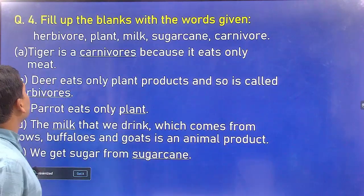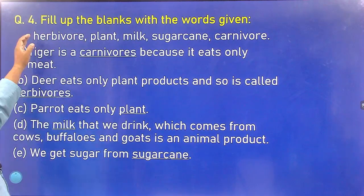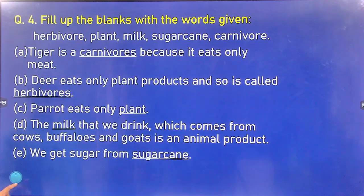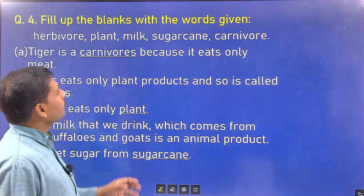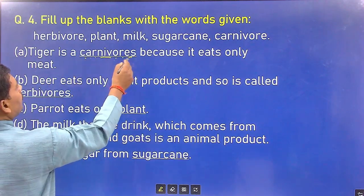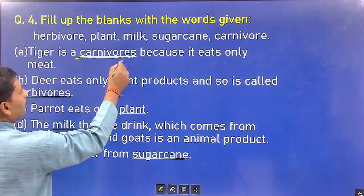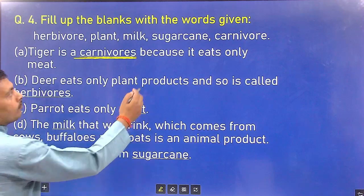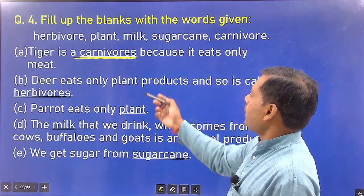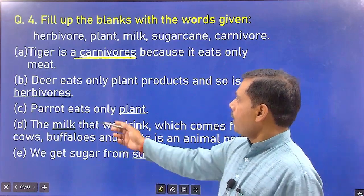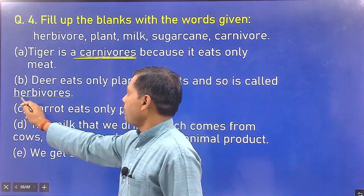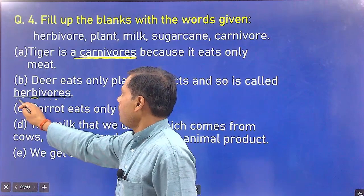The fourth question: Fill in the blanks. The words given are: herbivores, plant, milk, sugar cane, and carnivores. Blank A: The tiger is a carnivore, because it eats only meat. Blank B: Deer eat only plant products and so are called herbivores.